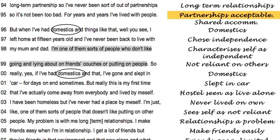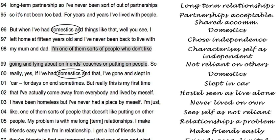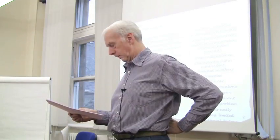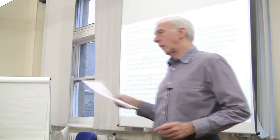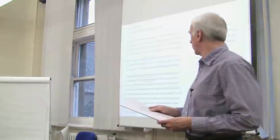Line 95 — 'partnership acceptable' — again, that's my interpretation. The evidence is that he says 'for years and years I've lived with people,' and he's not saying 'I find partnerships acceptable,' but I'm interpreting what's there. So I think I'm getting away from the midscript at that stage. There we are — that's an example of line-by-line coding.